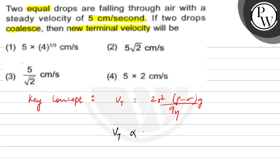So, vt is proportional to r squared. Let's find the radius of the new drop. The sum of two drops' volumes equals the big drop's volume.